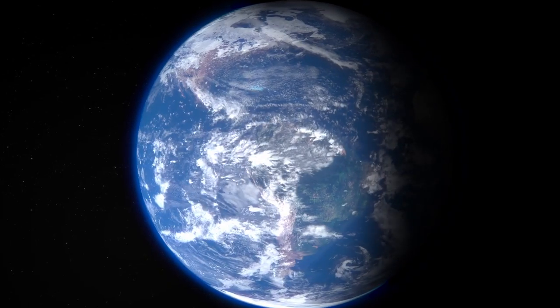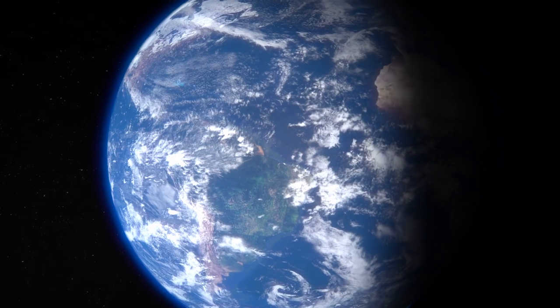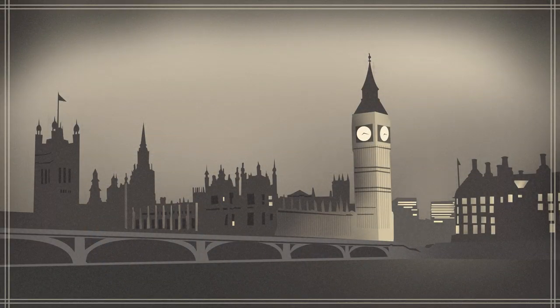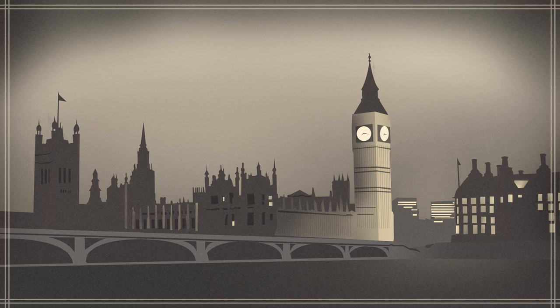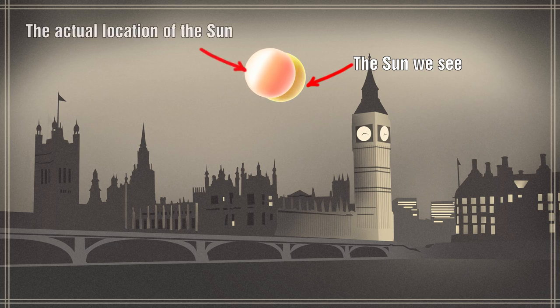Another often overlooked property of gravity is that it is an instantaneous action. To illustrate this, we know that it takes light from the sun about 500 seconds to travel to Earth. So the sun we see in the sky is actually from a position where it was 500 seconds ago. The difference is about 20 seconds of arc and this is large enough to be measured by astronomers.